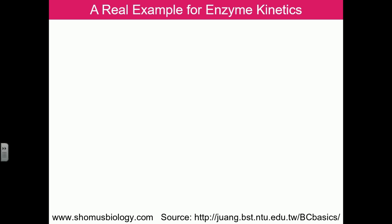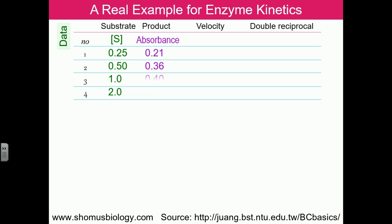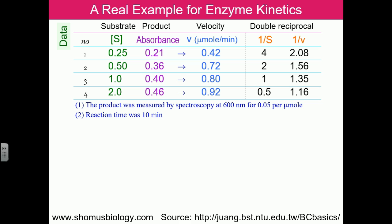Let's look at a real experimental data example. We start with substrate concentrations, product measured as absorbance at 600 nm, and calculate velocities as micromoles of product produced per minute. We then calculate double reciprocal values — 1/S and 1/v — which are straightforward to obtain from the data.